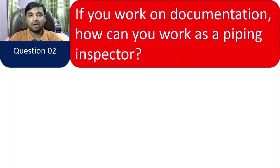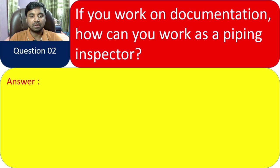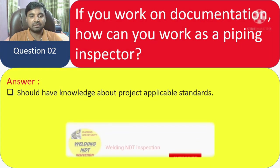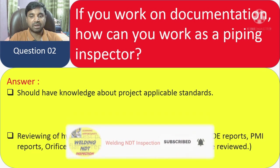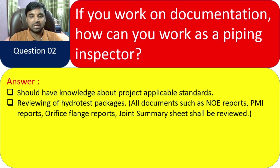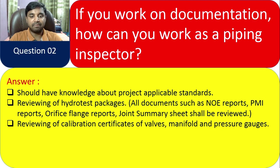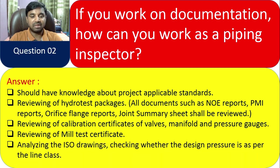Question 2: If you work on documentation, how can you work as a piping inspector — i.e., as a piping document controller? You should have knowledge about project applicable standards, reviewing of hydrostatic test packages, all documents such as NDT reports, PMI reports, RFI spooling reports, and joint summary sheets. Also, reviewing of calibration certificates for valves, manifolds, or pressure gauges, reviewing of mill test certificates, analyzing ISO drawings, and checking whether the design pressure is as per the line class.